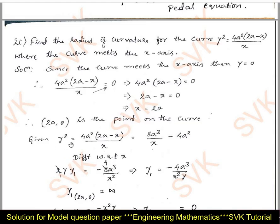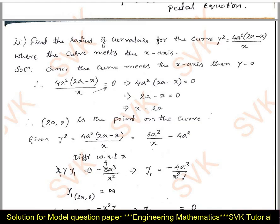The given curve y² = 4a²(2a − x)/x simplifies to 8a³/x − 4a². Differentiating with respect to x: 2y·y₁ = −8a³/x². So y₁ = −4a³/(x²y). Substituting the point (2a, 0), y = 0 in the denominator gives y₁ → ∞. Since y₁ is not finite, we take the reciprocal: x₁ = dx/dy = −x²y/(4a³). At (2a, 0), x₁ = 0.